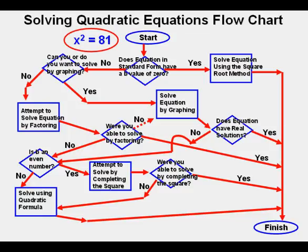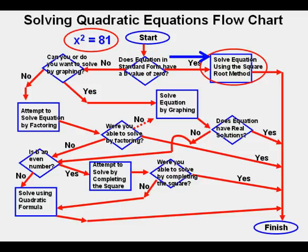The first equation we will look at is x squared equals 81. We go to the first decision node diamond at the top: does the equation in standard form have a b value of zero? Since in this equation there is no b or linear term — a linear term would be x or something times x — we answer yes and go to the right, shown by the blue arrow. Now we are at the 'solve the equation using the square root method' box.